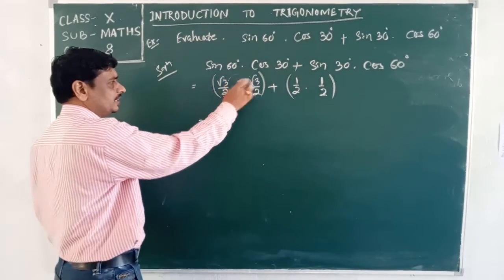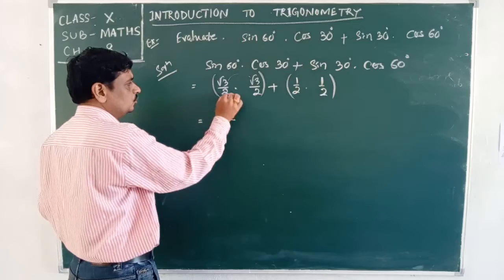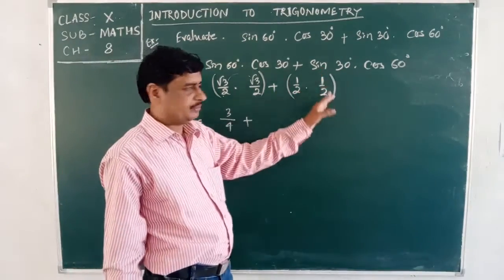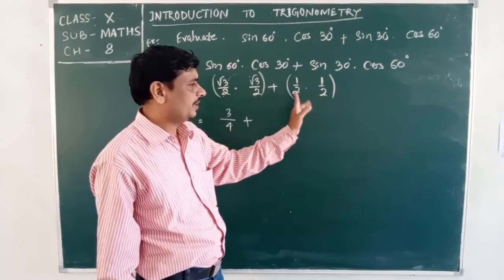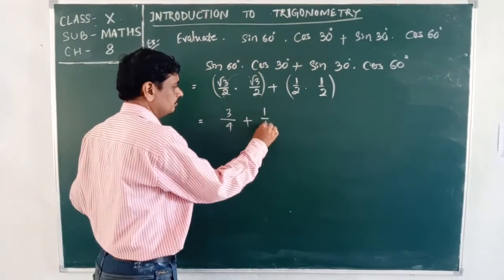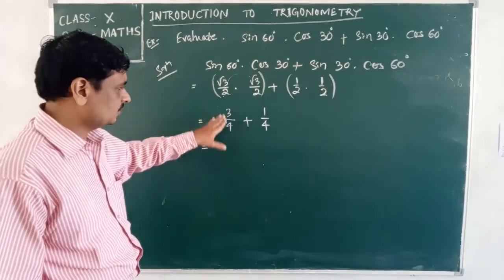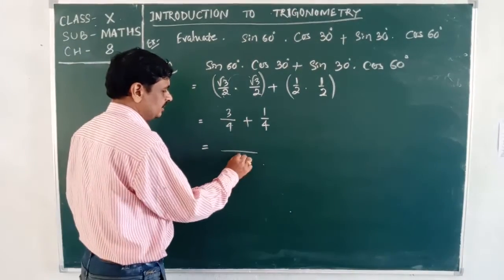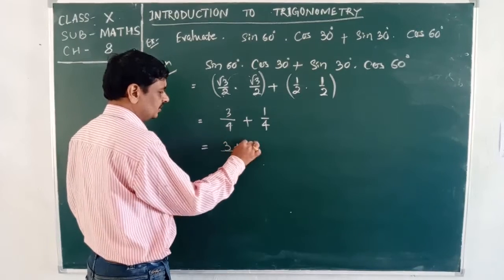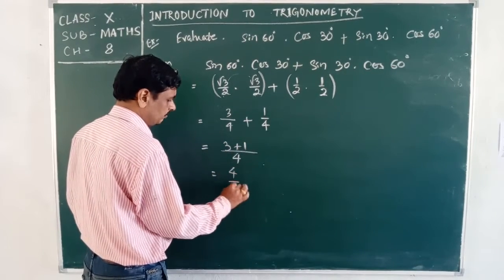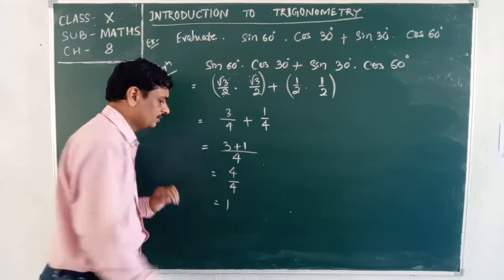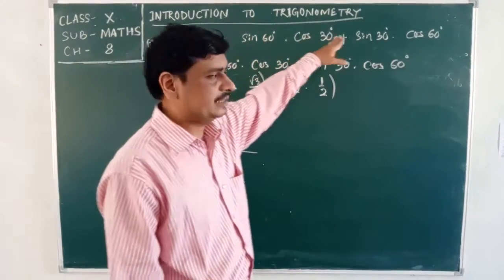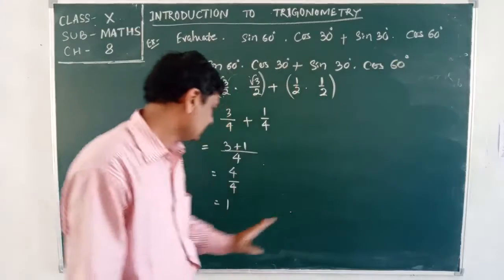For √3/2 × √3/2, numerator times numerator gives 3, and 2 × 2 gives 4, so that is 3/4. Similarly, 1/2 × 1/2 is 1/4. Taking LCM as 4, the numerator becomes 3 + 1 = 4, giving 4/4 = 1. So the value of sin 60° × cos 30° + sin 30° × cos 60° is 1.